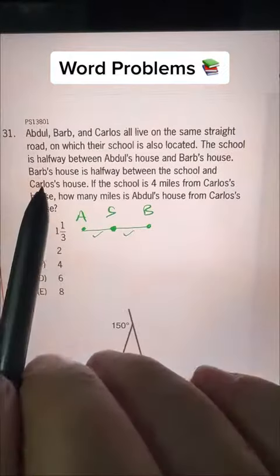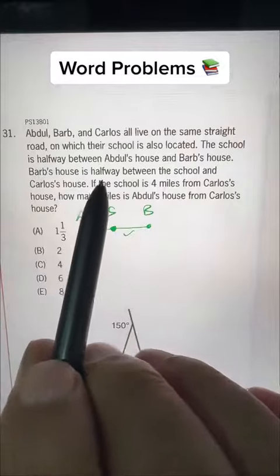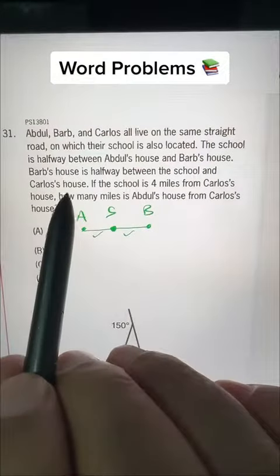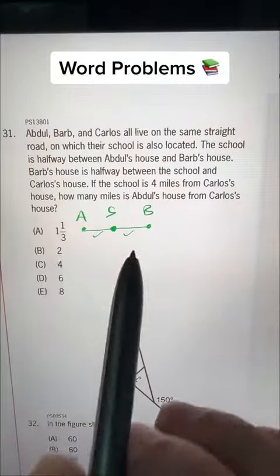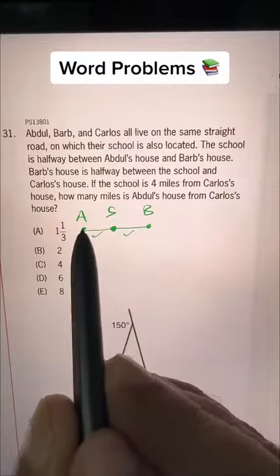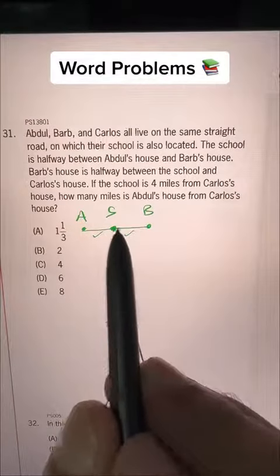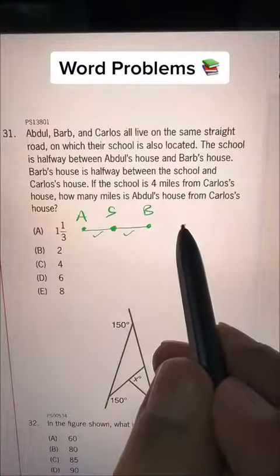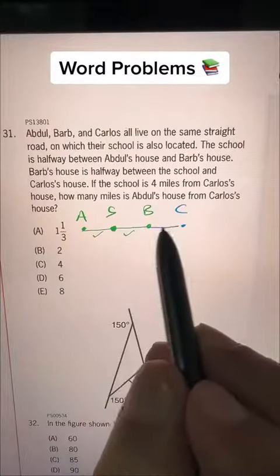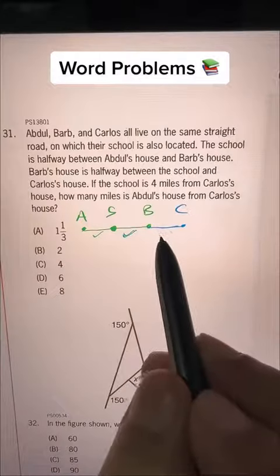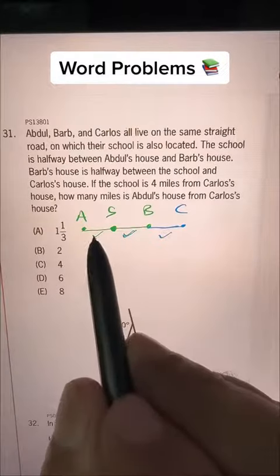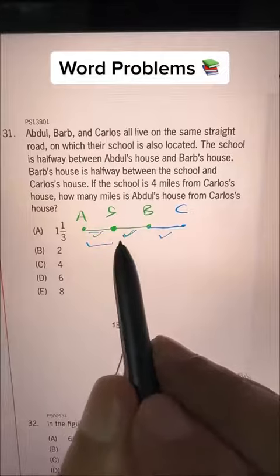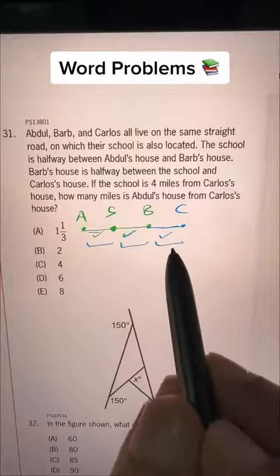Okay, so Barb's house is halfway between the school and Carlos's house. So it means like this S is between A and B, this B is between S and C. So C must be somewhere here, and these two, now this and this, they are also equal. It means all of these portions, three portions, they are equal in length.